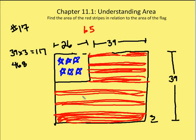Now let's take the 3 red stripes in the bottom. We know that their length is going to be 65, and we know that their width is going to be 3.